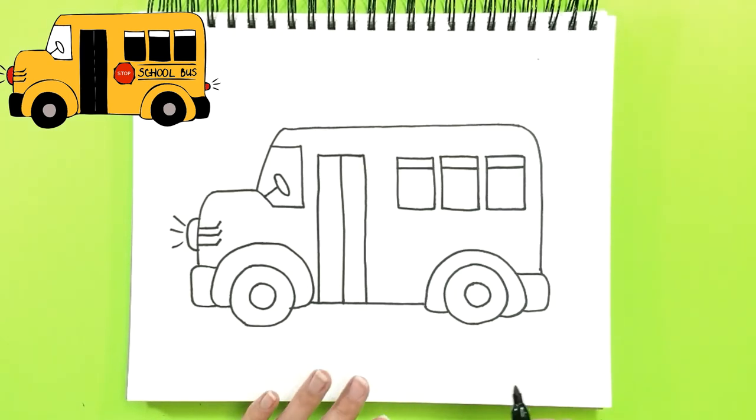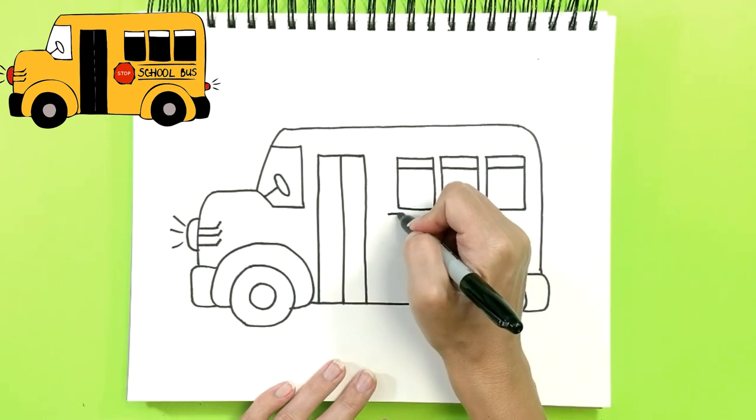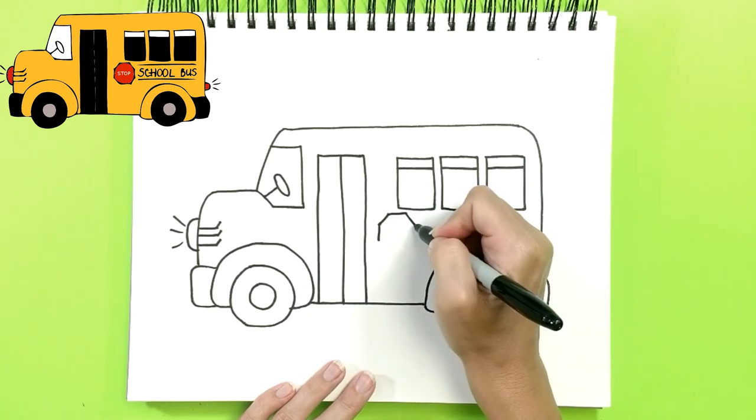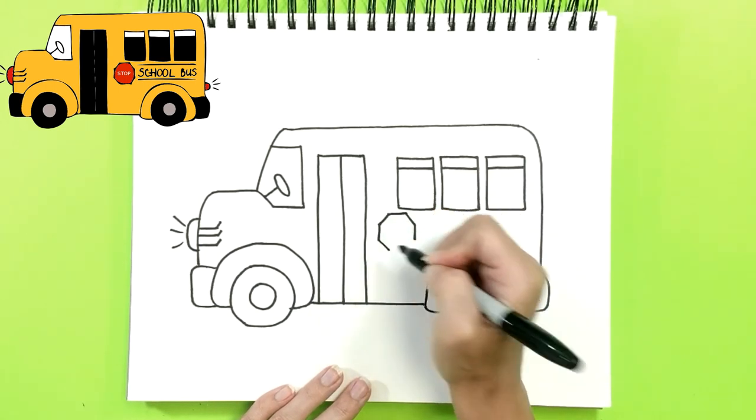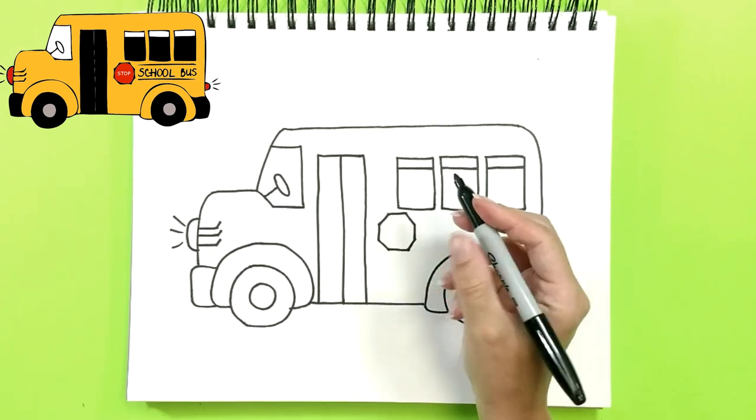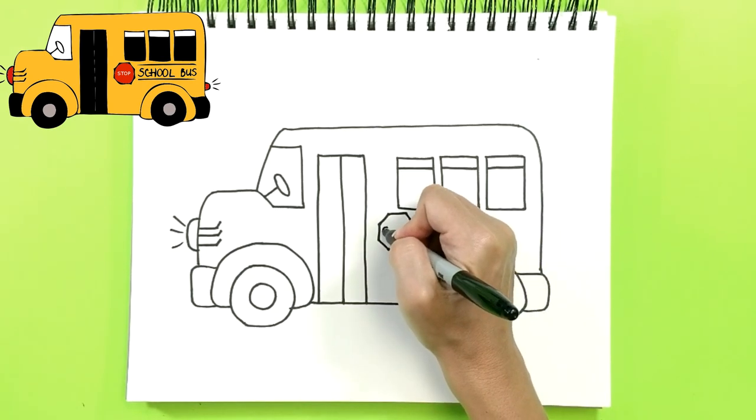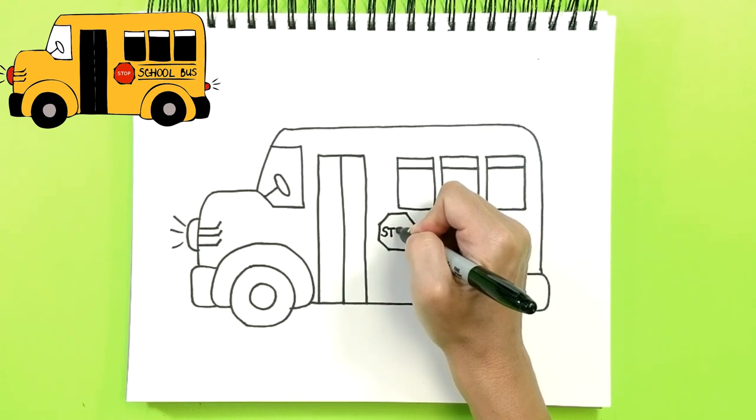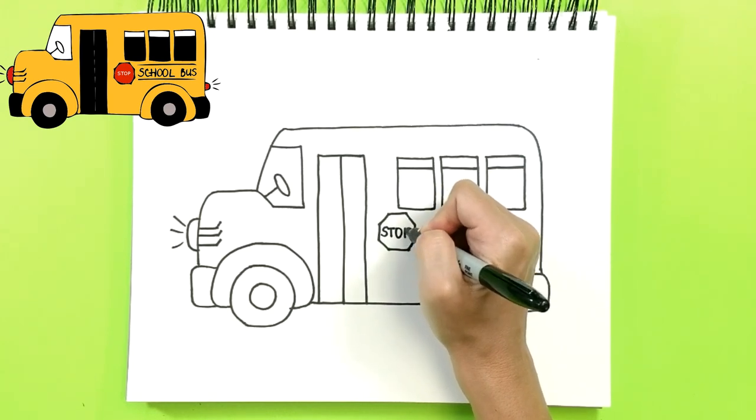And do you remember the school bus has a stop sign, which comes out when the bus stops? So let's draw the stop sign. And you can write the word 'stop' right in the middle. Do you know how to write it? It's S-T-O-P. Stop.